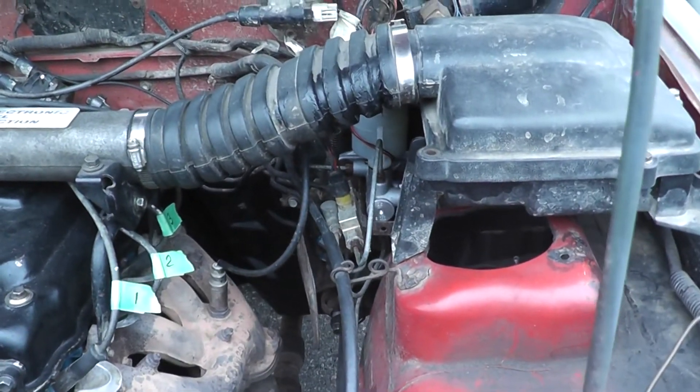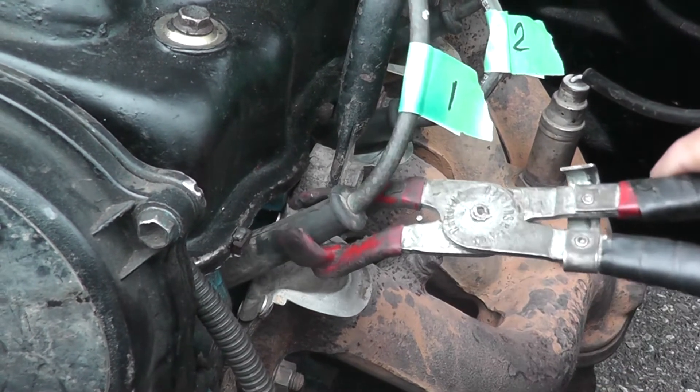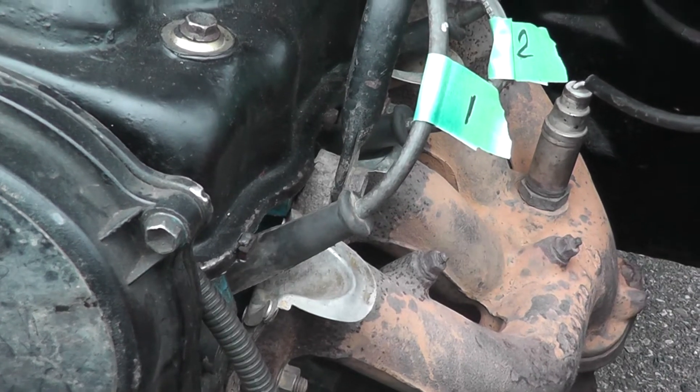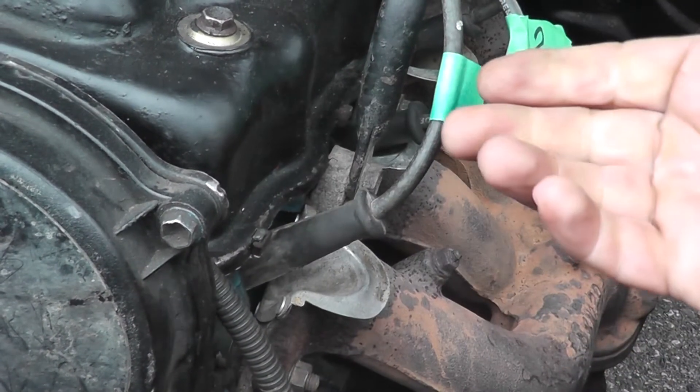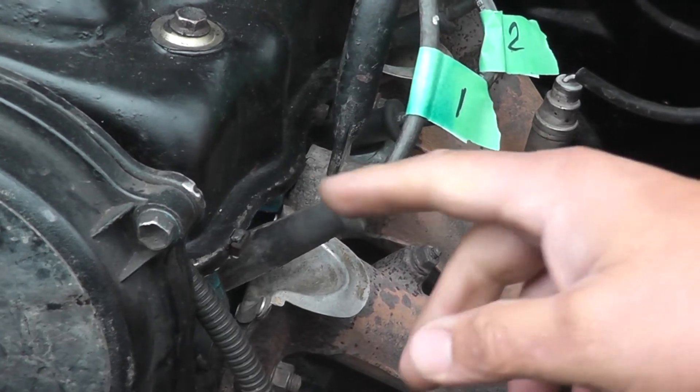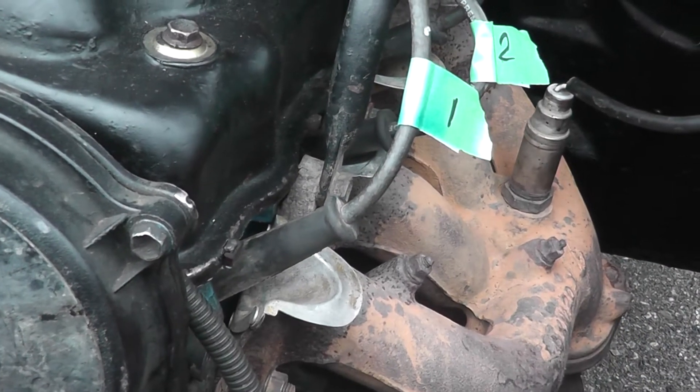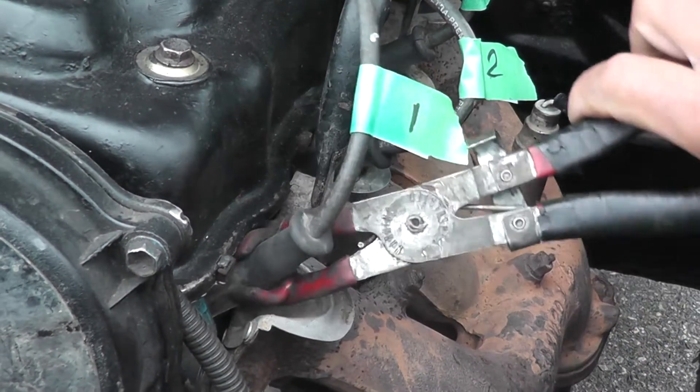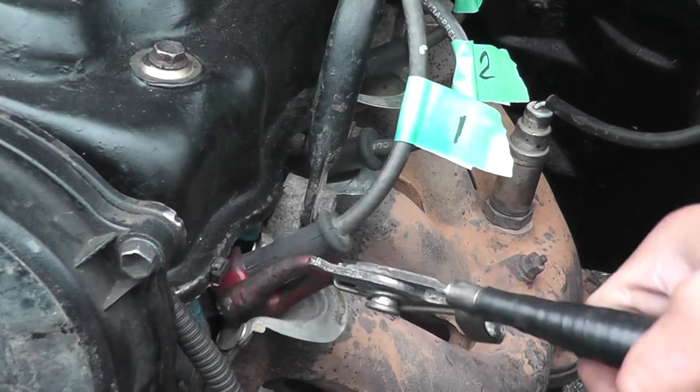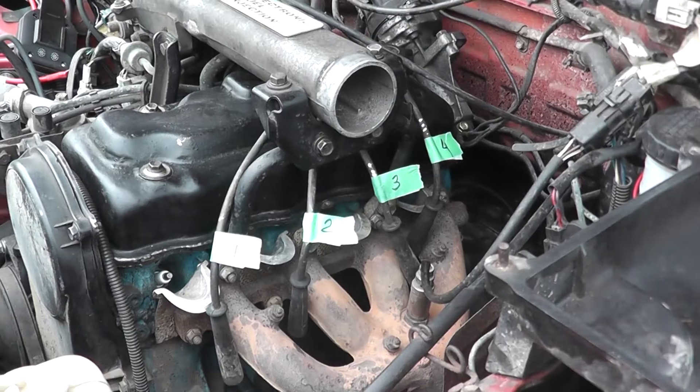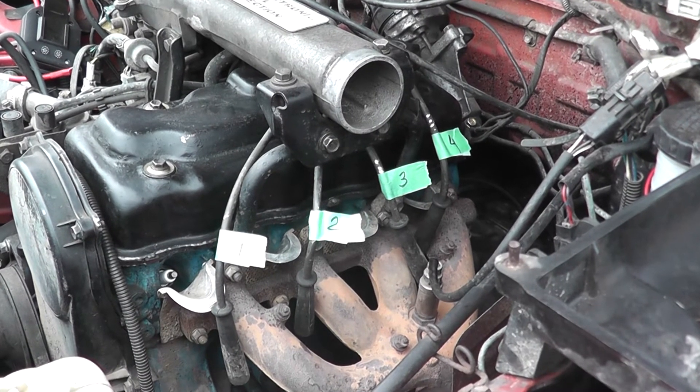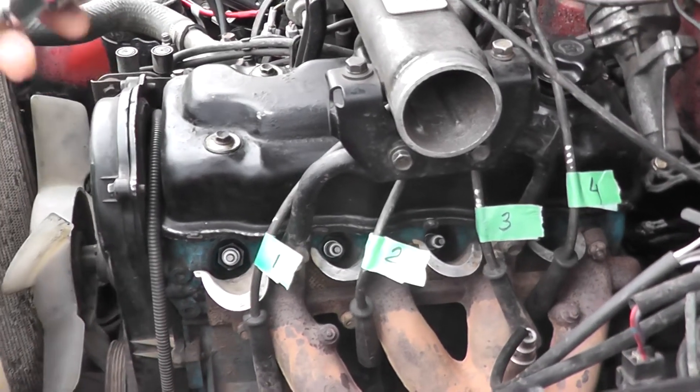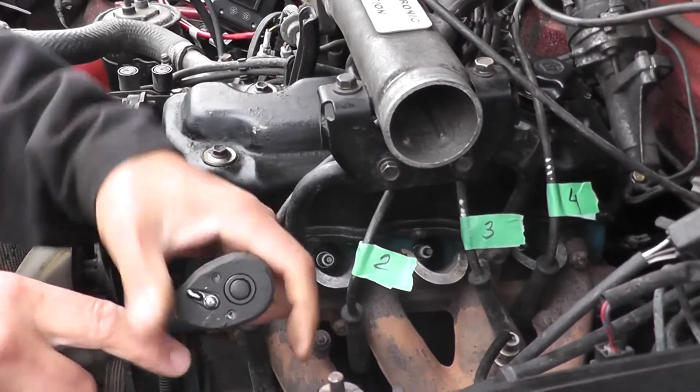Okay, so we're going to remove the spark plug wires. One thing you want to watch is don't ever just go and start pulling the wires straight out. Especially for an older vehicle, they break off. If one breaks off, most of the time you're buying the whole kit. The idea is make sure you're able to twist the wire. If you're able to twist the wire, most of the time it will come off in one piece. So we have all the four wires off. Now we're going to take our spark plugs out. We're going to use our spark plug socket.